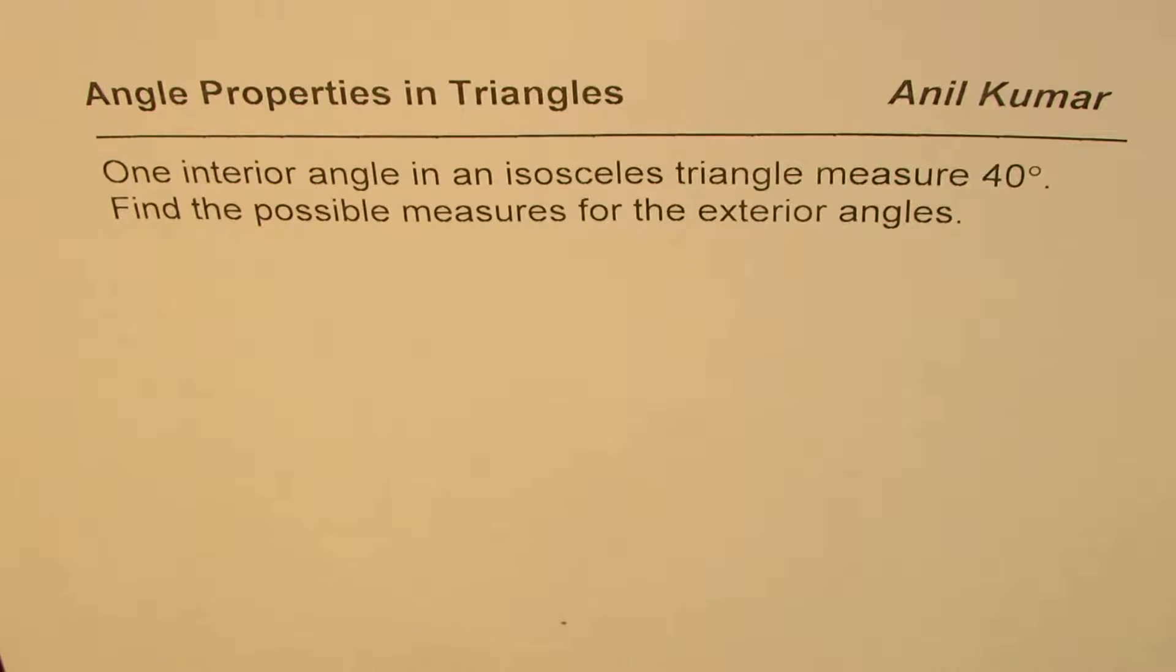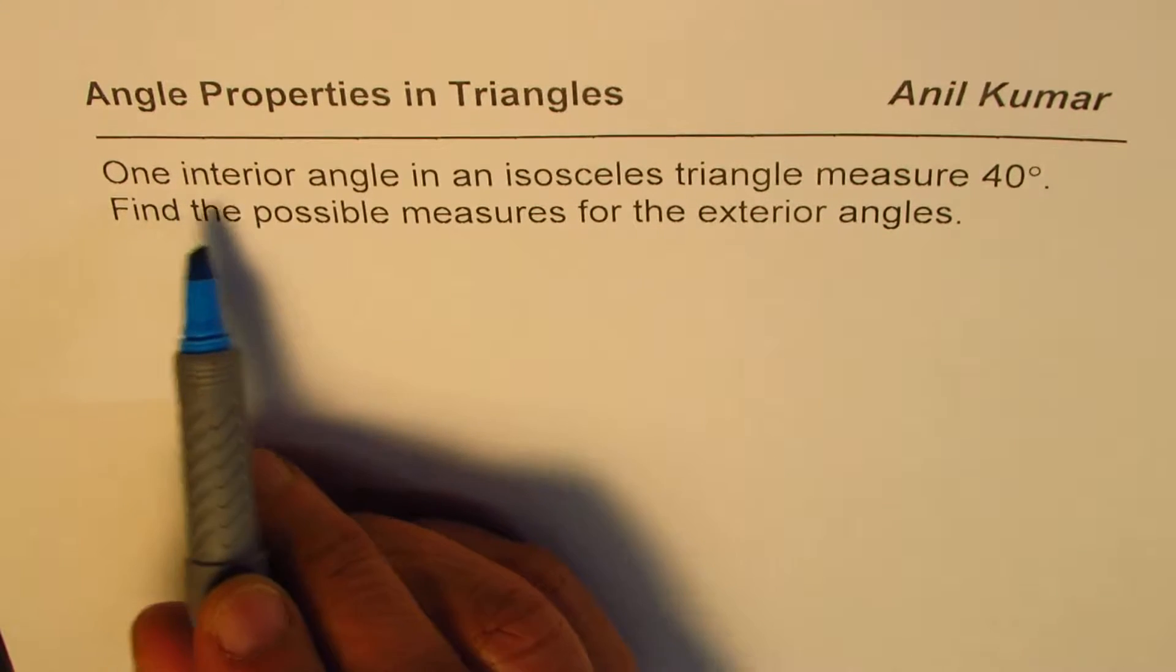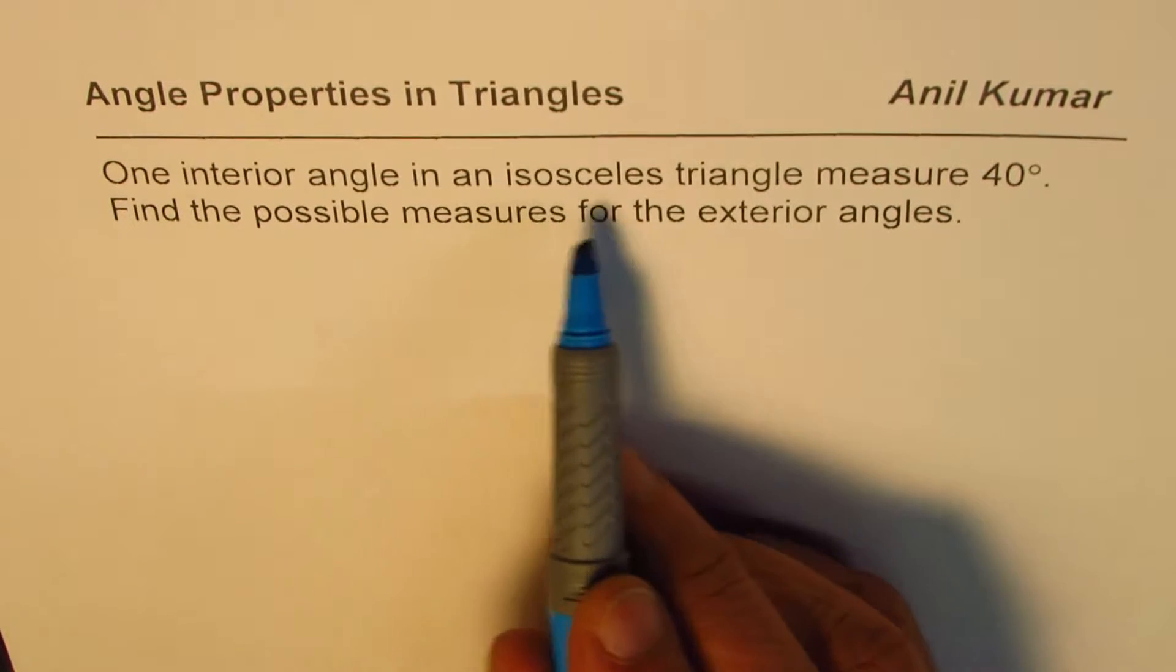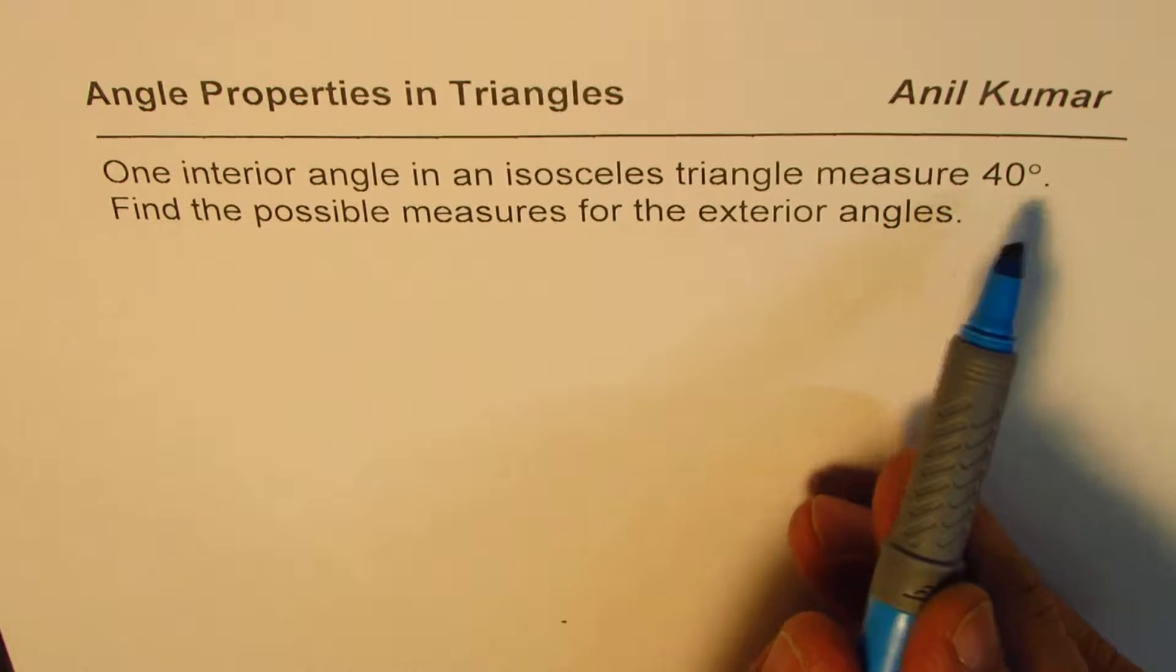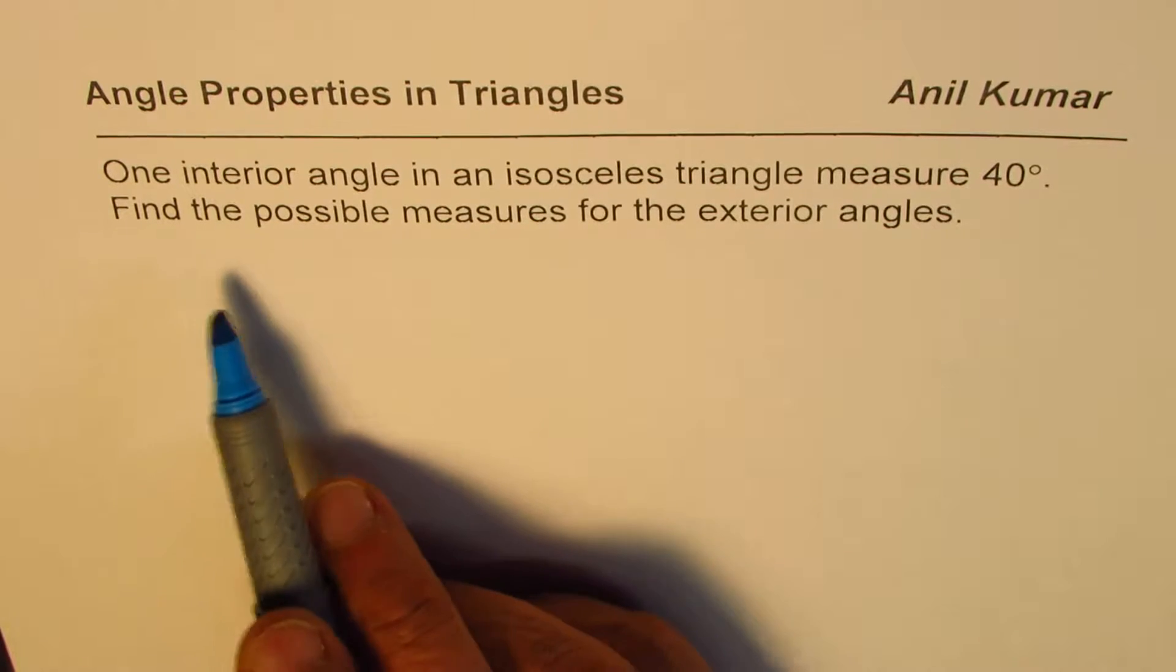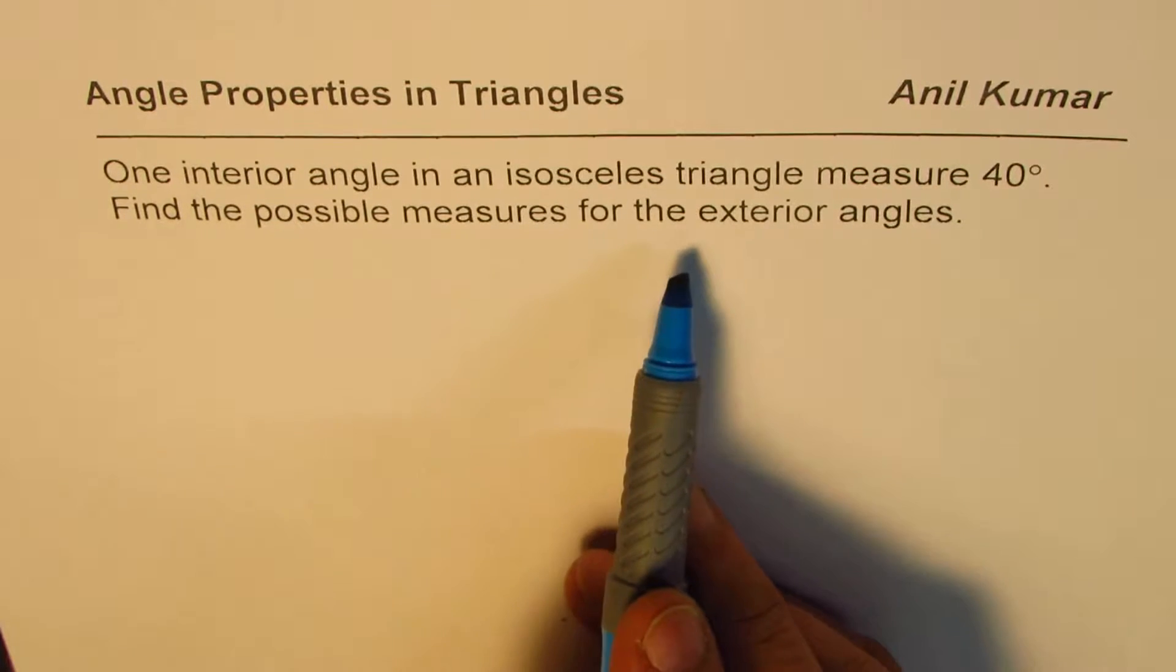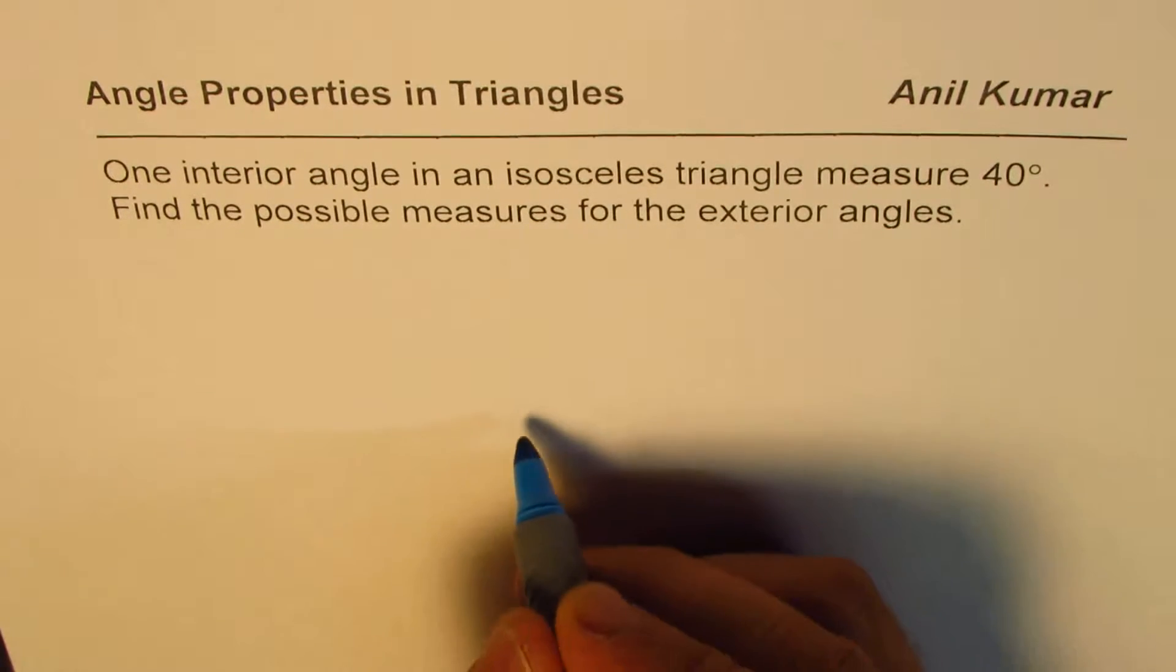I'm Anil Kumar sharing with you a very interesting question on angle properties in triangles. The question is: one interior angle in an isosceles triangle measures 40 degrees. Find the possible measures for the exterior angles.